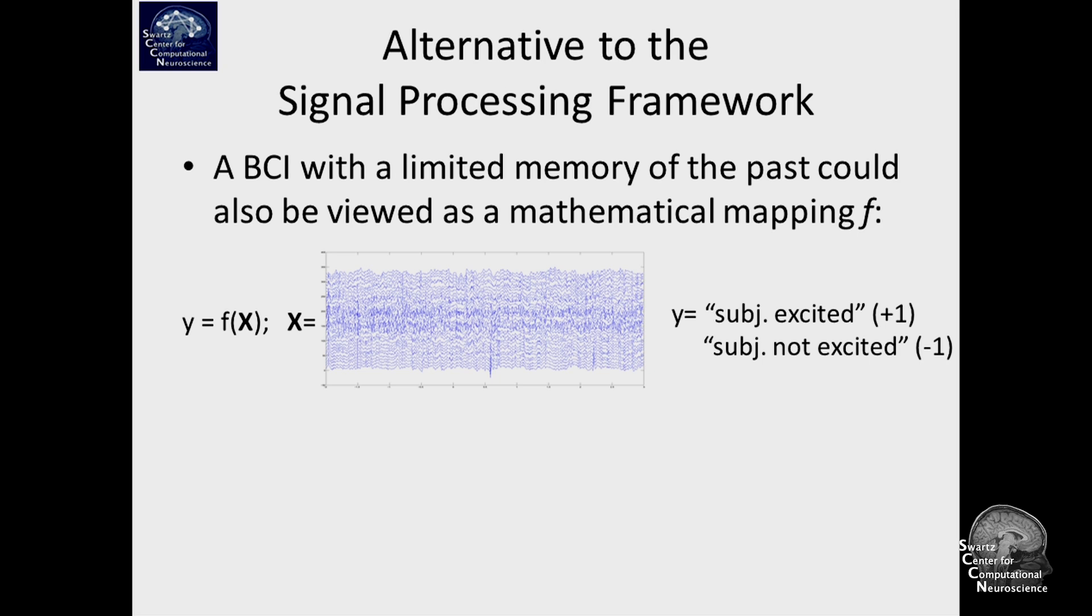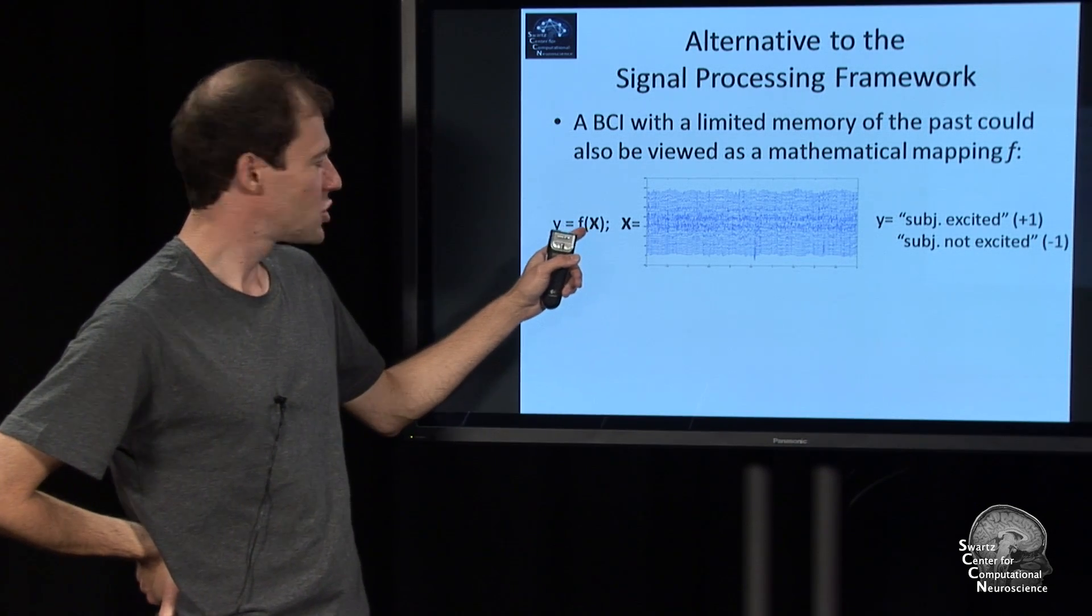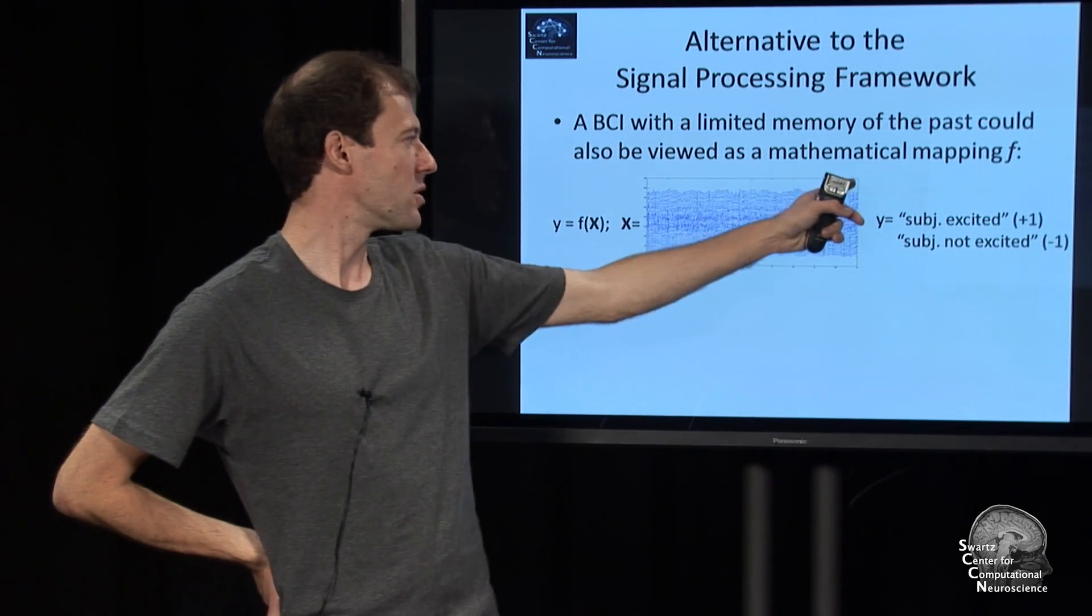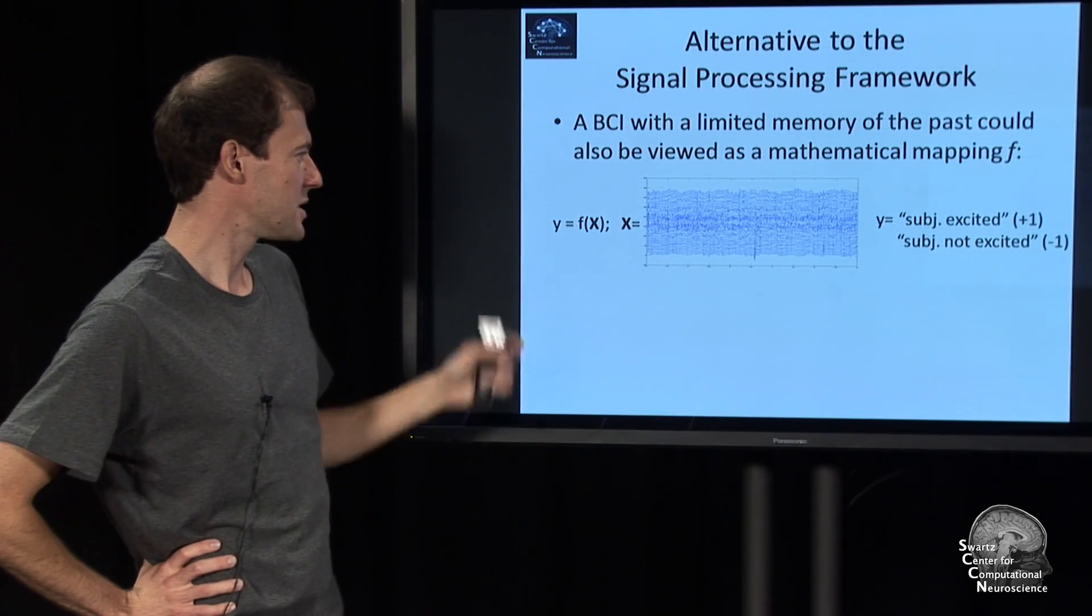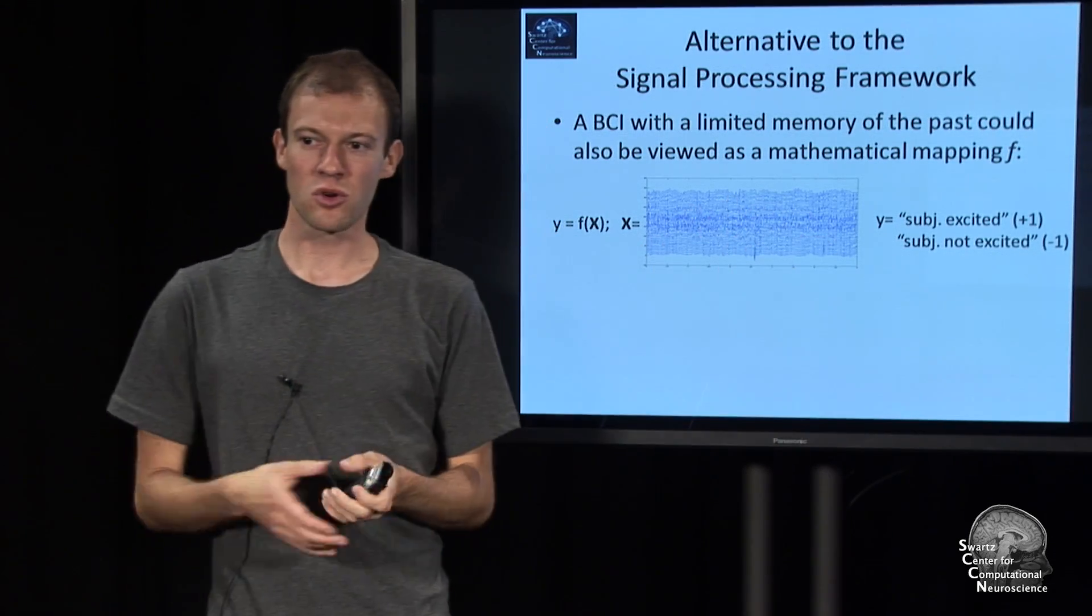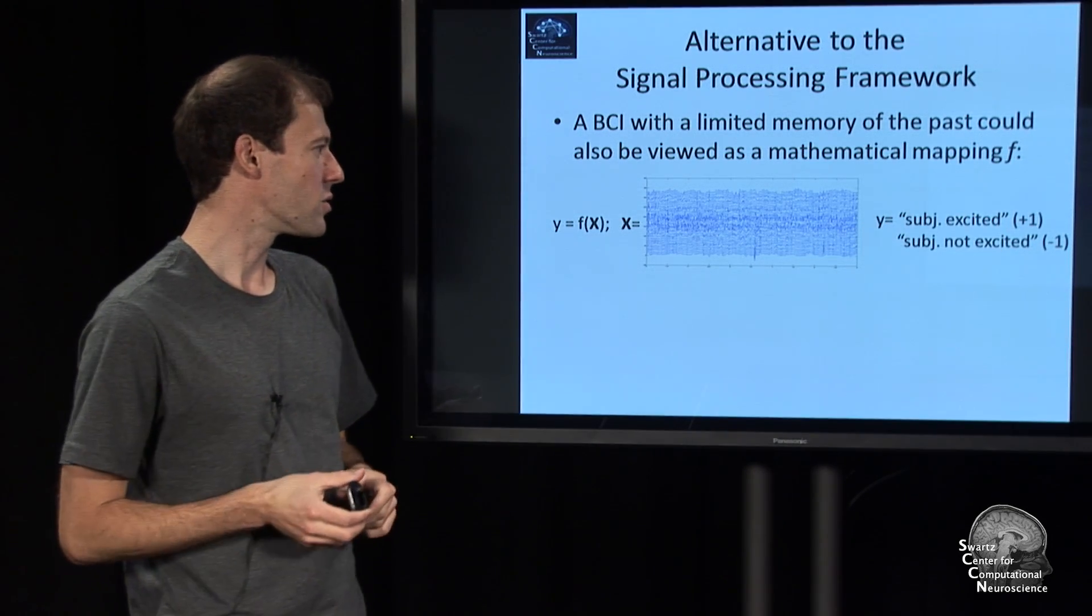You could say that a brain-computer interface which has a limited memory of the past can be viewed as a mathematical function or mapping of some input chunk of signal, which is basically a matrix—number of channels times number of time points in the memory—onto the output of the BCI. The output can be a single number, binary like excited or not excited, a continuous value, or multidimensional.